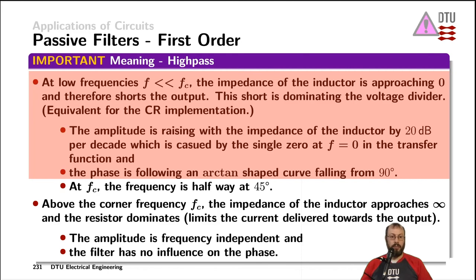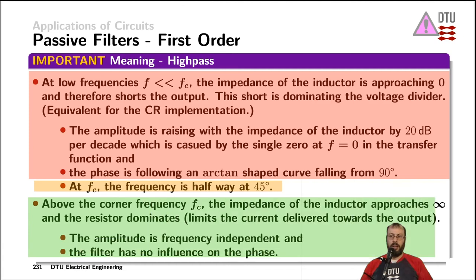Approaching the corner frequency, the phase approaches 45 degrees, having started at plus 90 degrees. Above the corner frequency, in the inductor implementation, its impedance approaches infinity since it is proportional to frequency — j·omega·L — and therefore all the input voltage appears across the inductor, which is in parallel with the output, while the series resistor has a low influence. The phase shift of the transfer function approaches zero.